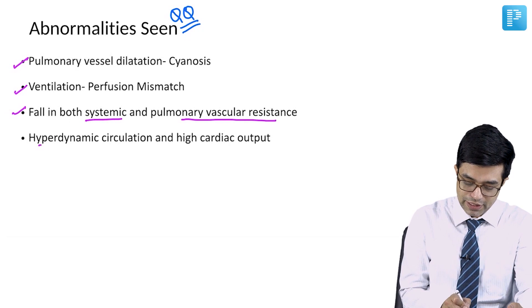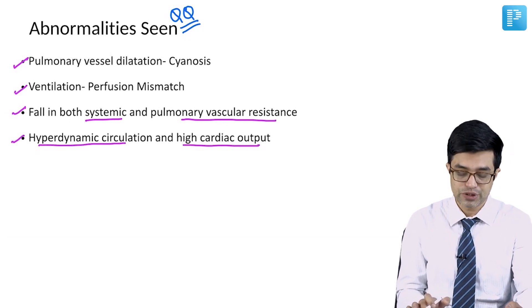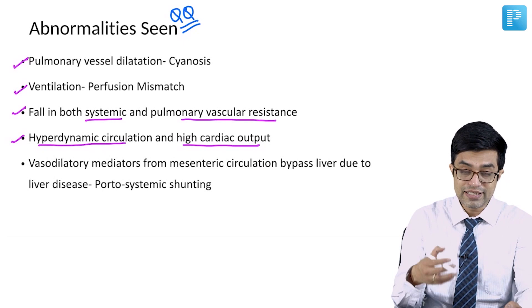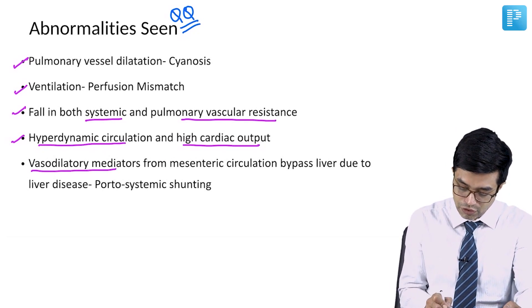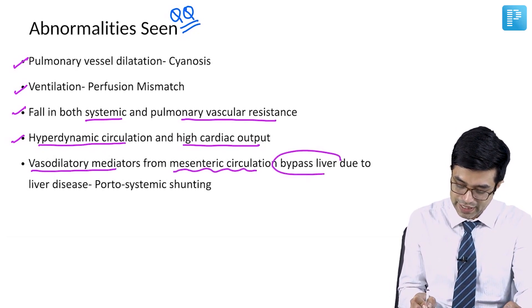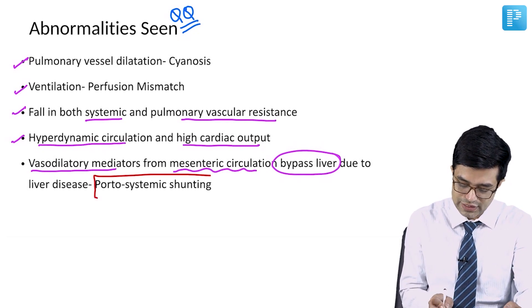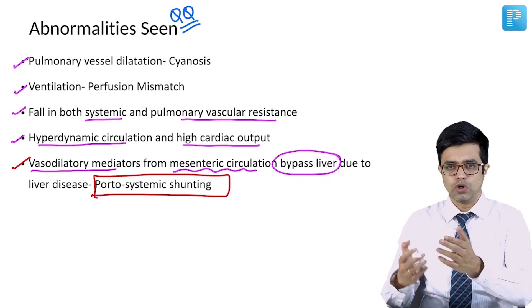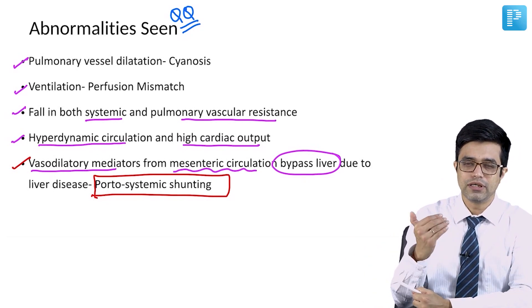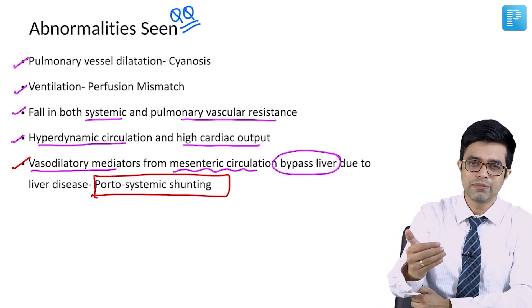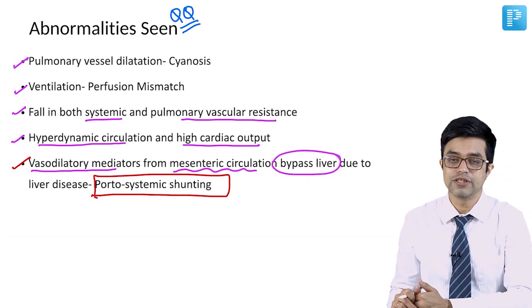There is a hyperdynamic circulation and high cardiac output seen in these patients. The reason for all this is that vasodilatory mediators from mesenteric circulation bypass the liver due to liver disease — we call it portosystemic shunting. Normally, such mediators are filtered out by the liver, but now, since they are able to reach the pulmonary circulation directly, they cause this problem.